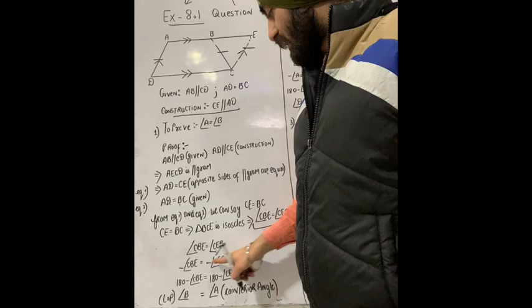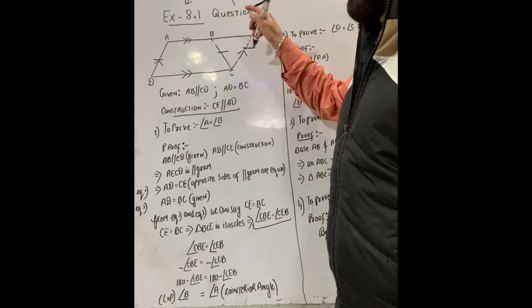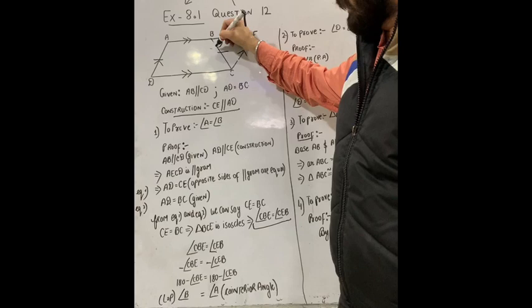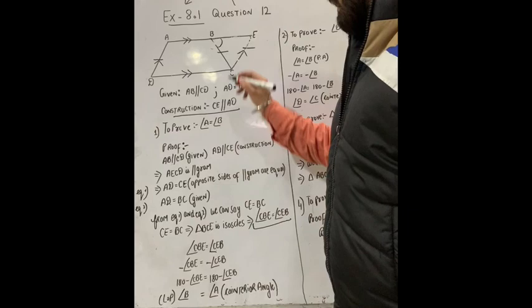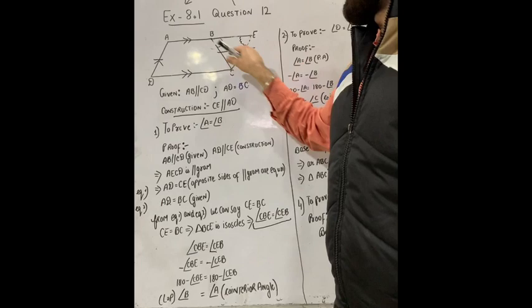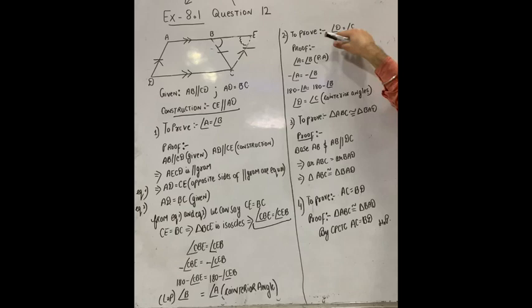Since CE is equal to BC, triangle CBE is isosceles. We introduce co-interior angles: angle CEB and angle CBE are equal. Using co-interior angles, the sum is 180°. So angle A and angle CEB are co-interior angles, and their sum is 180°.